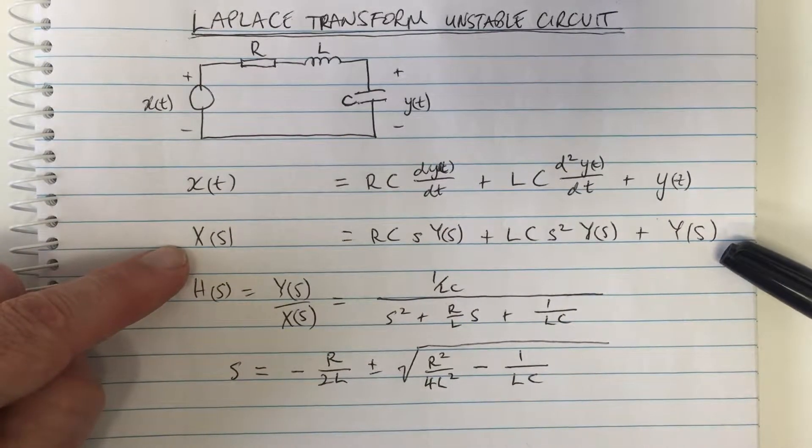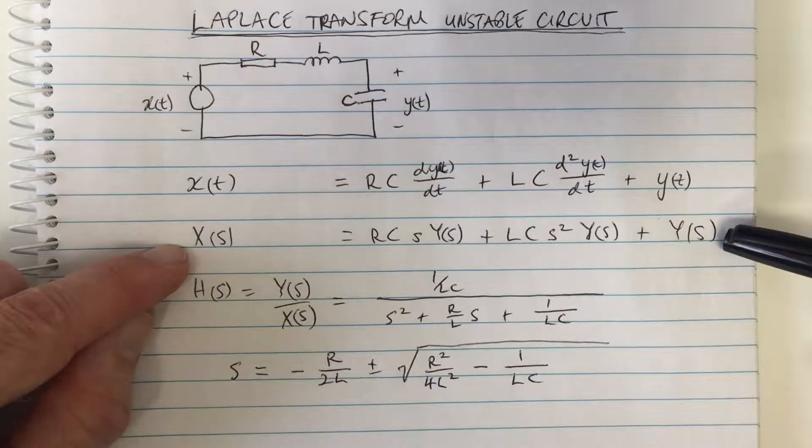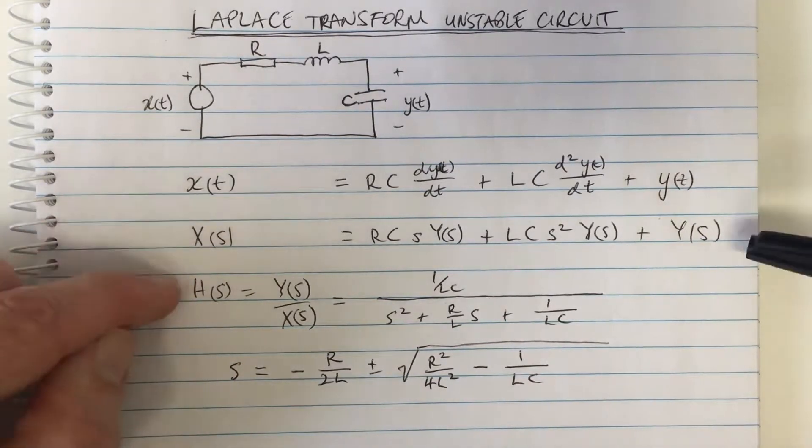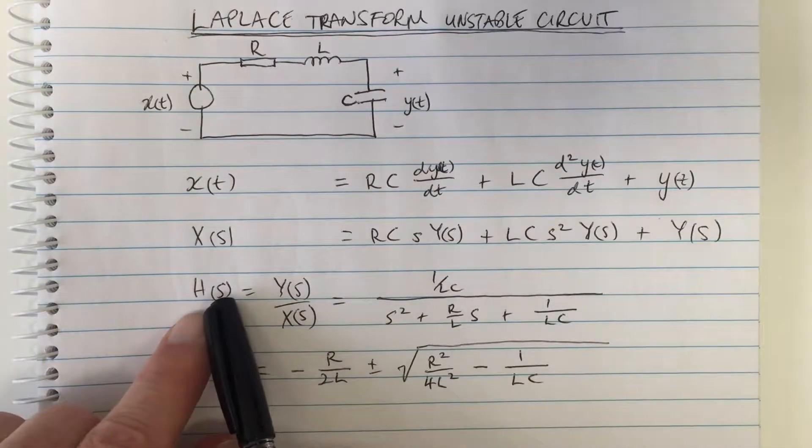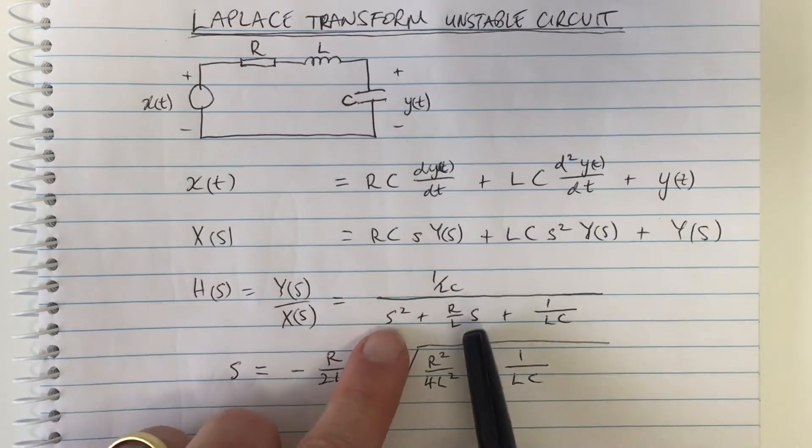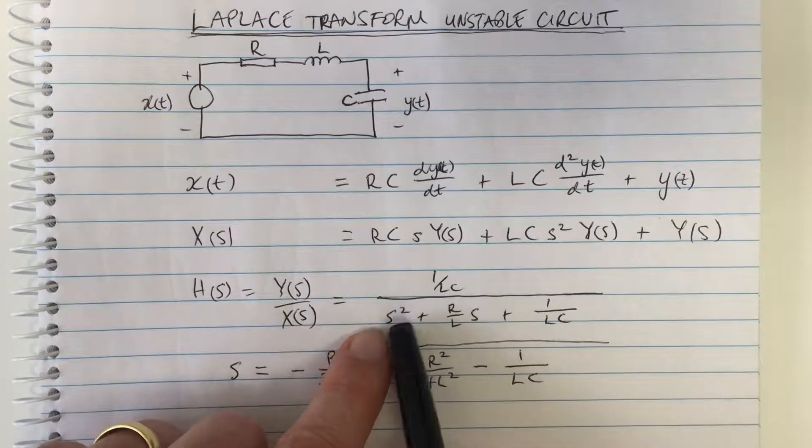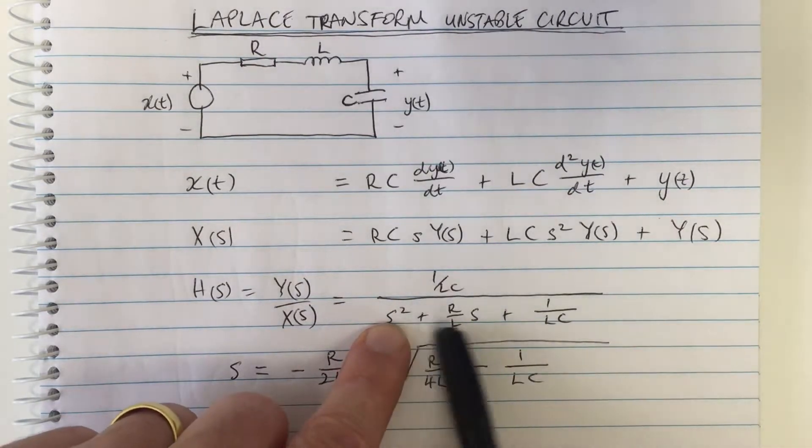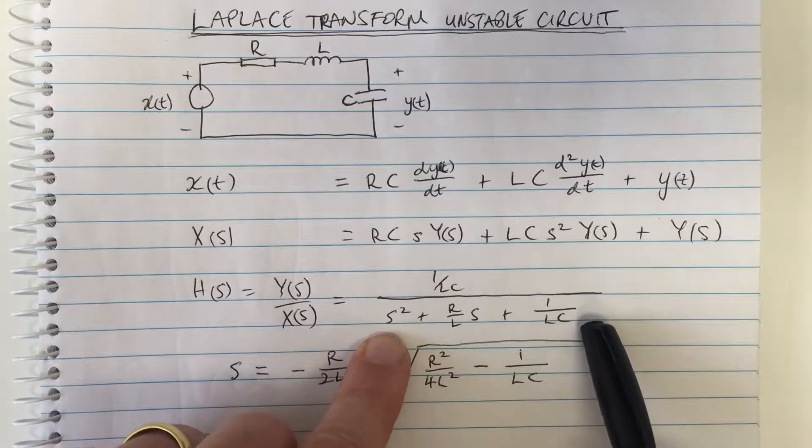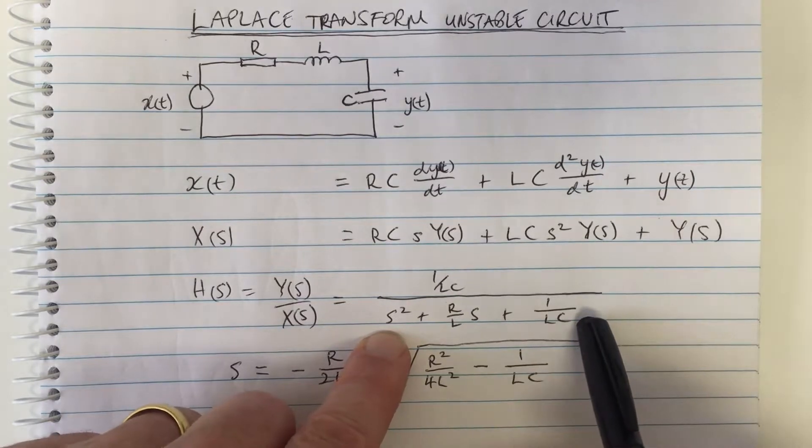I've written it here with Laplace transform with the s, but you could do it with Fourier transforms because those Fourier transform expressions exist. You would get a transform with j omega instead of s, and j omega squared of course would be j squared is minus 1 times omega squared. We could then look up Fourier transform tables to find the impulse response for this.